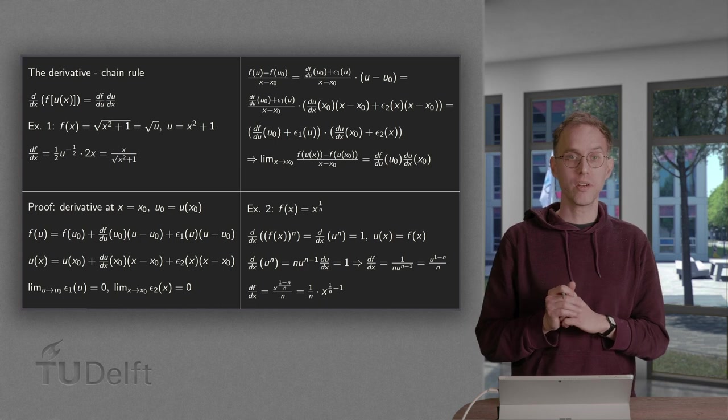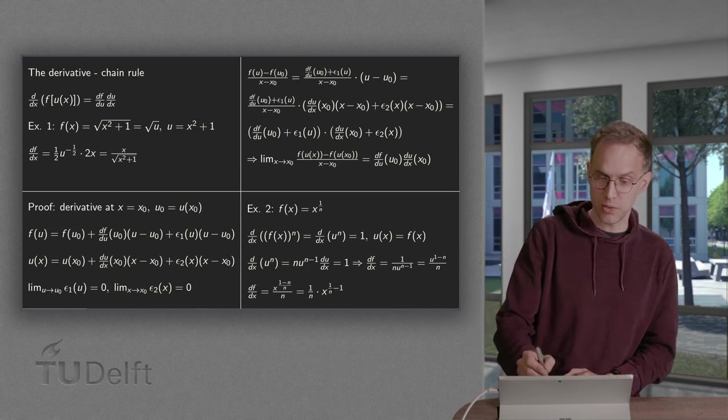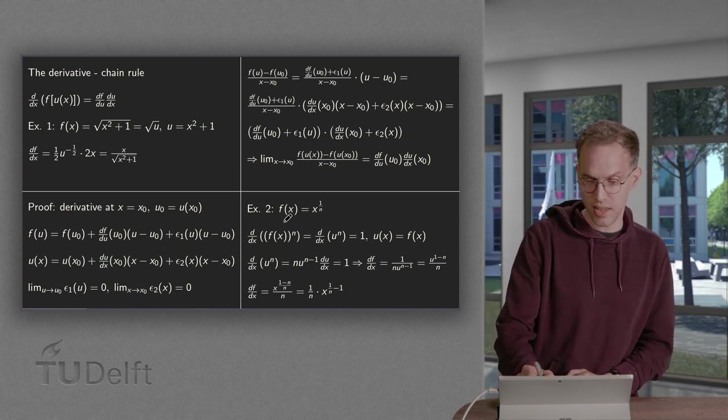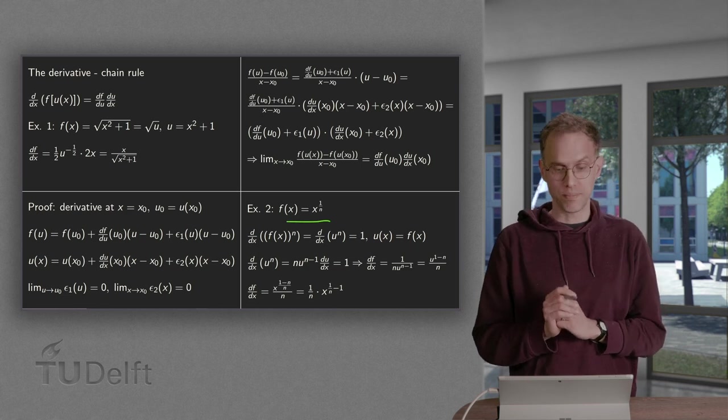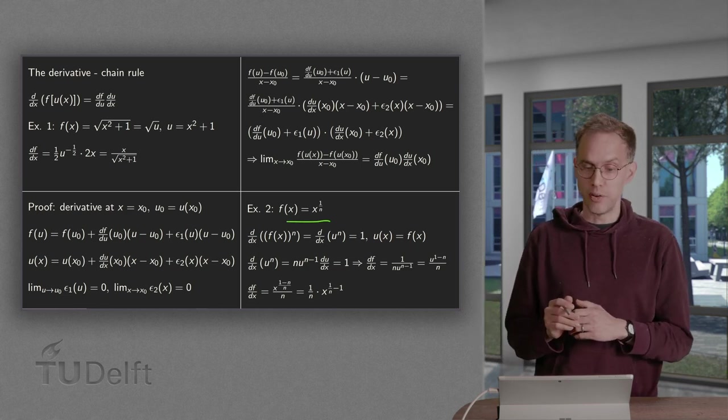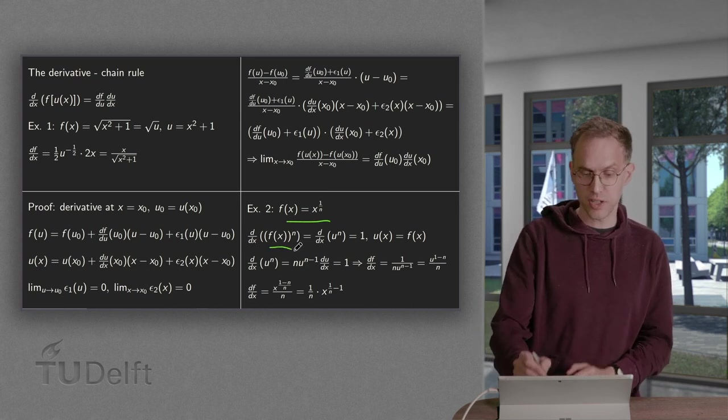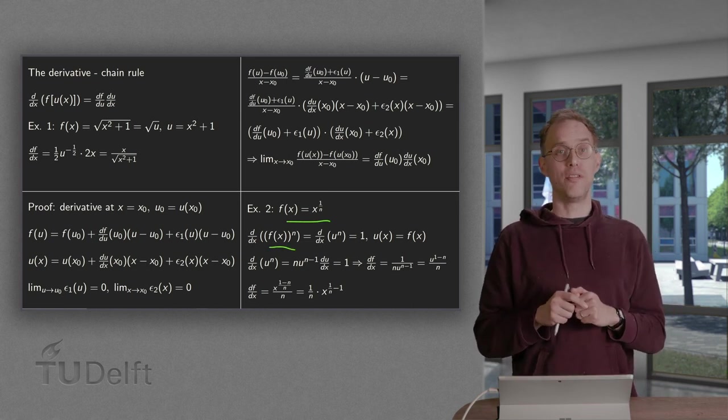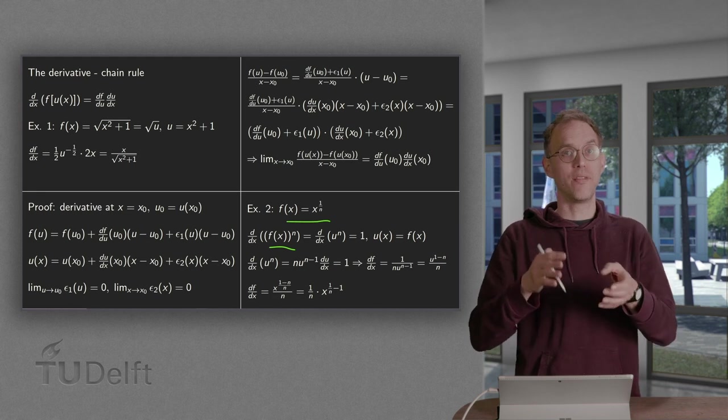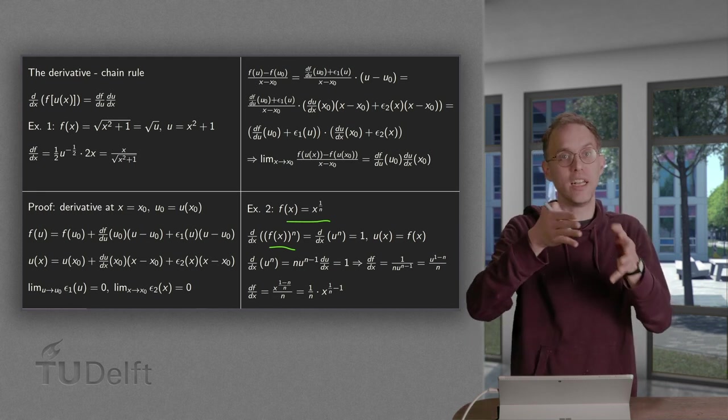So how does this work? Well we can use the chain rule to compute the derivative of x to the power 1 over n. So how do we do this? We compute the derivative of f(x) to the power n. Well if we have f(x) to the power n we have x to the power 1 over n to the power n is just x. So if we compute its derivative we get 1.